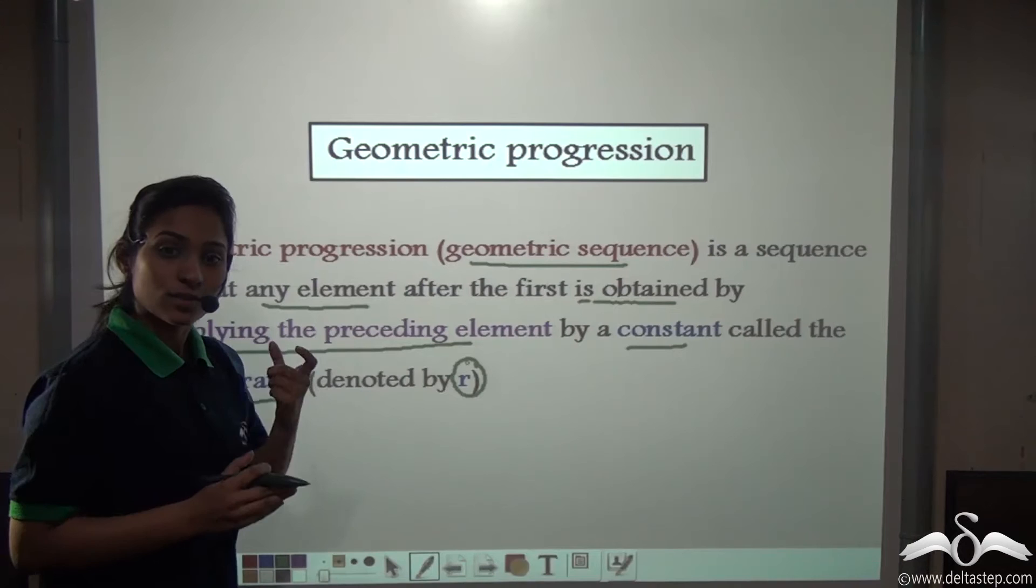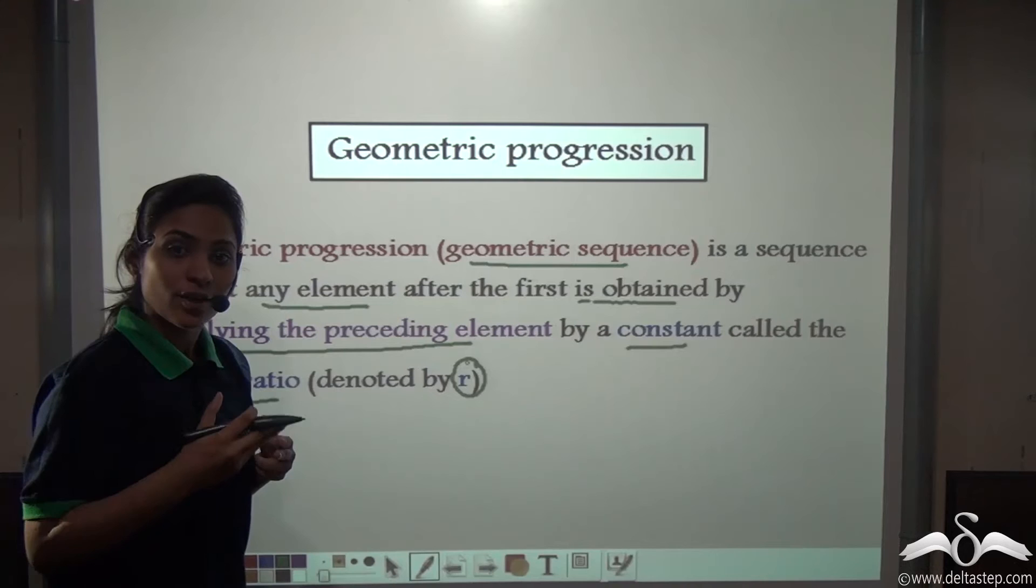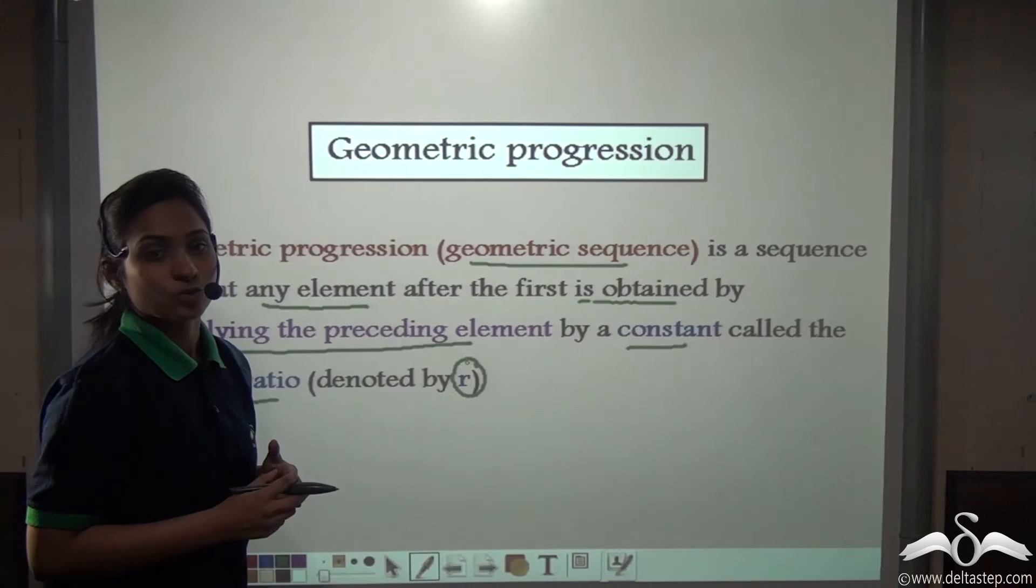So in our case we were multiplying 6 with a constant term which was 3. 6 into 3, 18. 18 into 3, 54. So that 3 was constant. So that 3 is the common ratio.